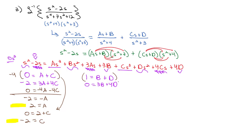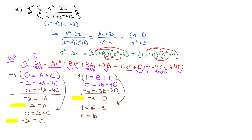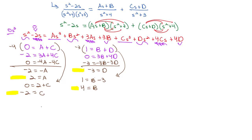For the B and D system, multiplying the constant equation by negative 3 and adding to the squared equation gives negative 3 equals D. Then from 1 equals B plus D, we get B equals 4. So our inverse Laplace transform expression becomes the inverse Laplace transform of (2s plus 4) over (s squared plus 4) plus (negative 2s plus negative 3) over (s squared plus 3).